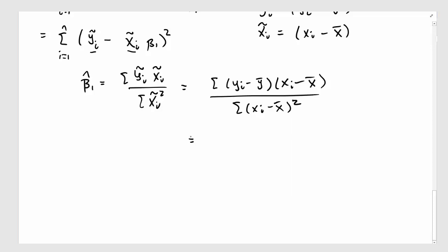Thus, I can divide both sides by n minus 1, both the numerator and the denominator by n minus 1. And this works out to be the covariance between y and x divided by the variance of x,